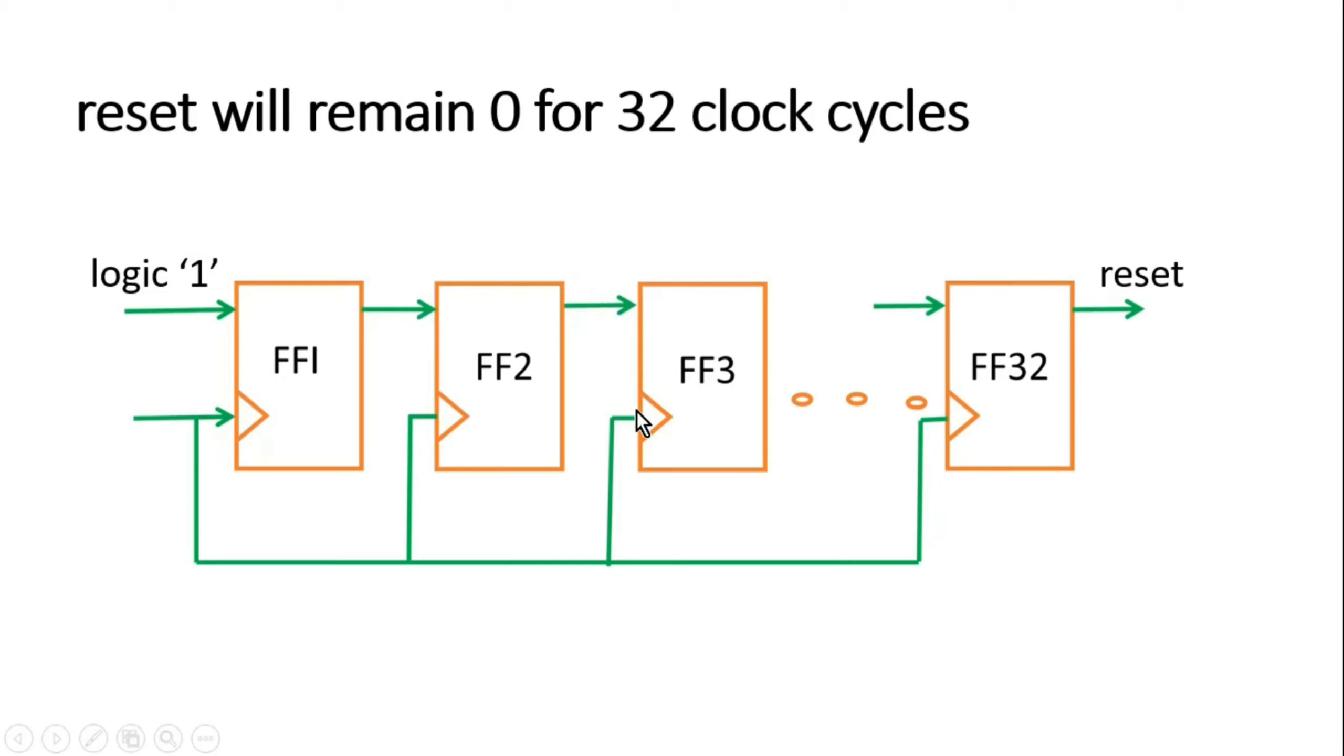In the third clock cycle, this one will reach the output of the third flip-flop. After 32 clock cycles, this one will reach the output of the 32nd flip-flop—I mean to say, the last flip-flop in this chain.